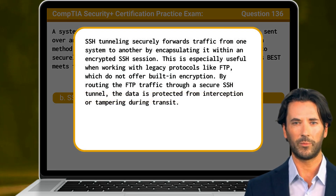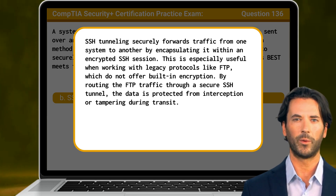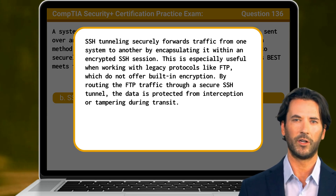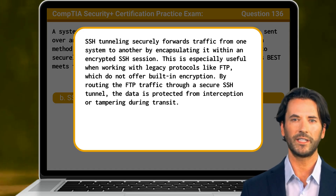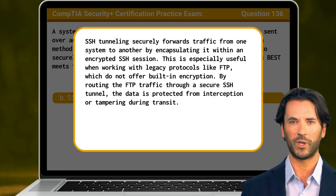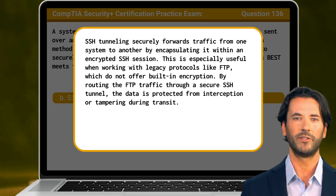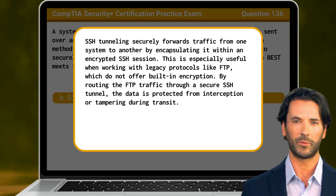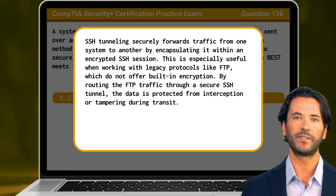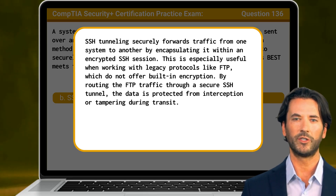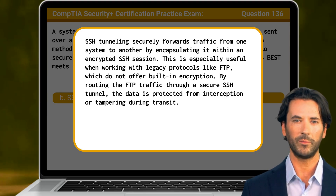SSH tunneling securely forwards traffic from one system to another by encapsulating it within an encrypted SSH session. This is especially useful when working with legacy protocols like FTP, which do not offer built-in encryption. By routing the FTP traffic through a secure SSH tunnel, the data is protected from interception or tampering during transit.